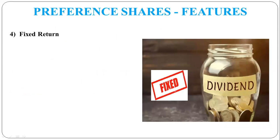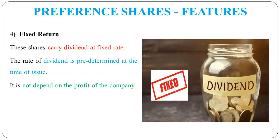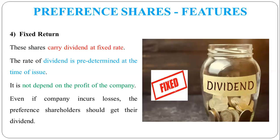Another feature is fixed return. In equity shares, the dividend is fluctuating, but in preference shares the dividend is fixed and predetermined at the time of issue. For example, a 10% preference share means shareholders will always get a 10% dividend. The dividend for preference shares does not depend on whether the company makes a profit or a loss — the dividend is fixed and shareholders will receive it regardless.